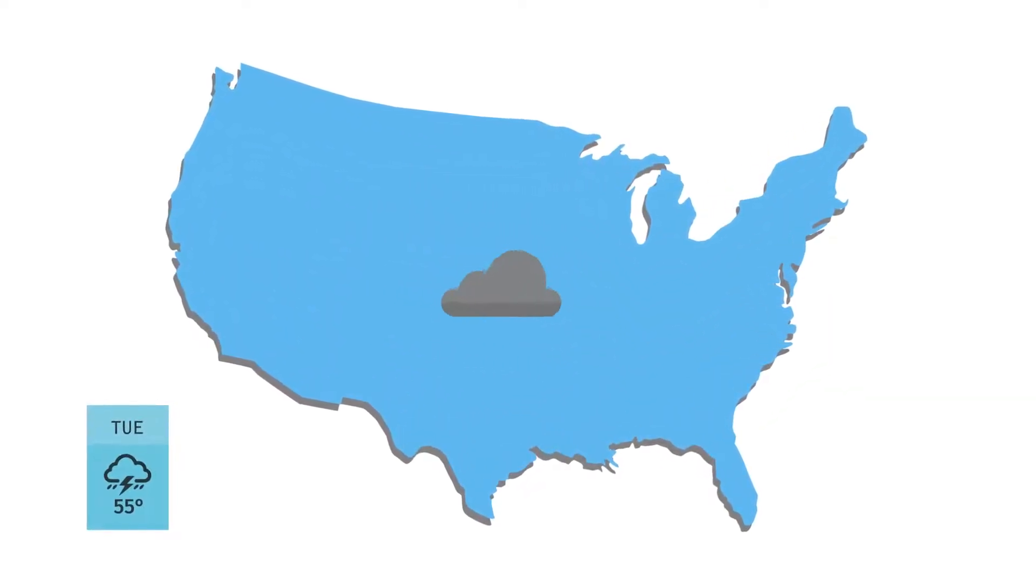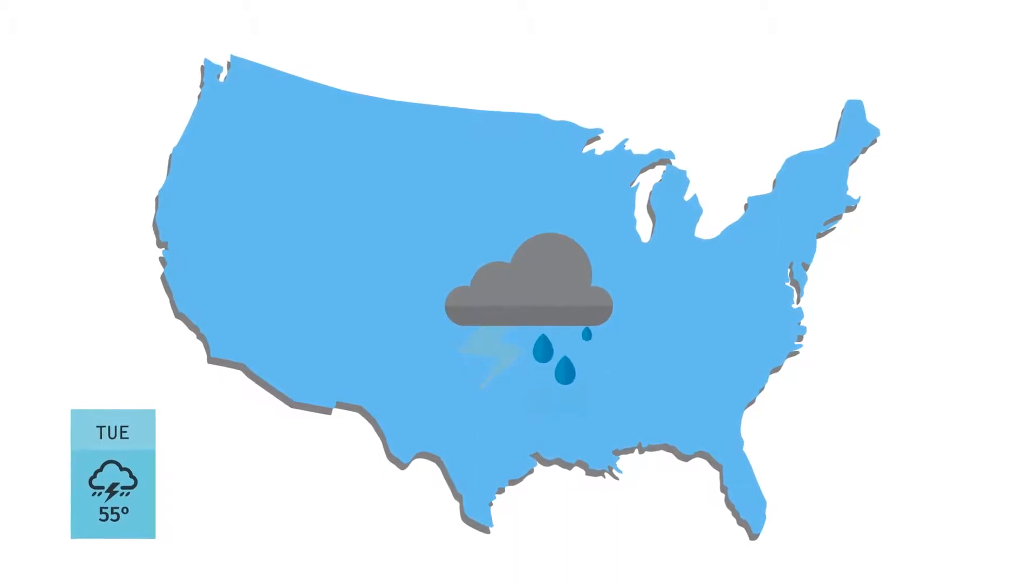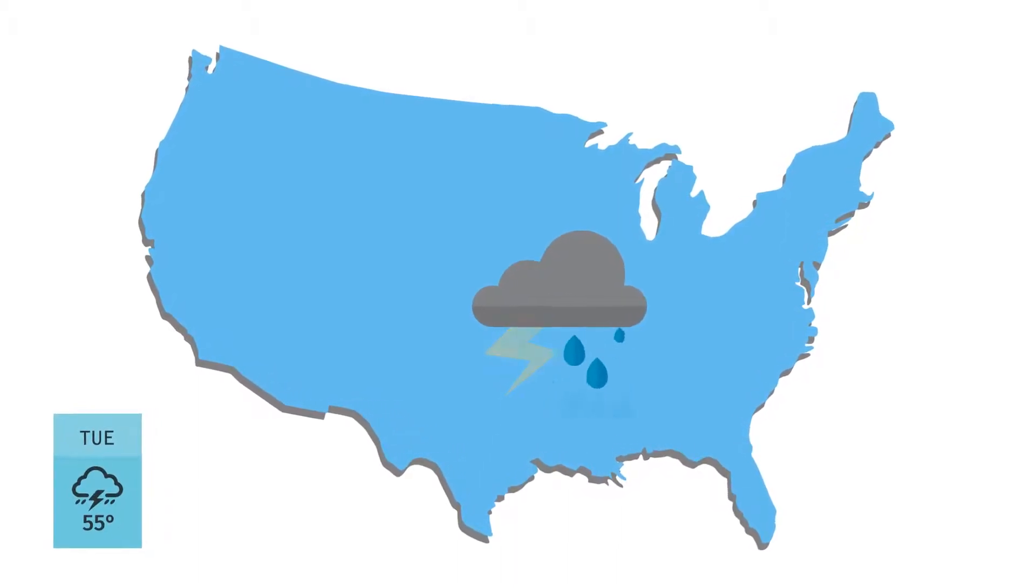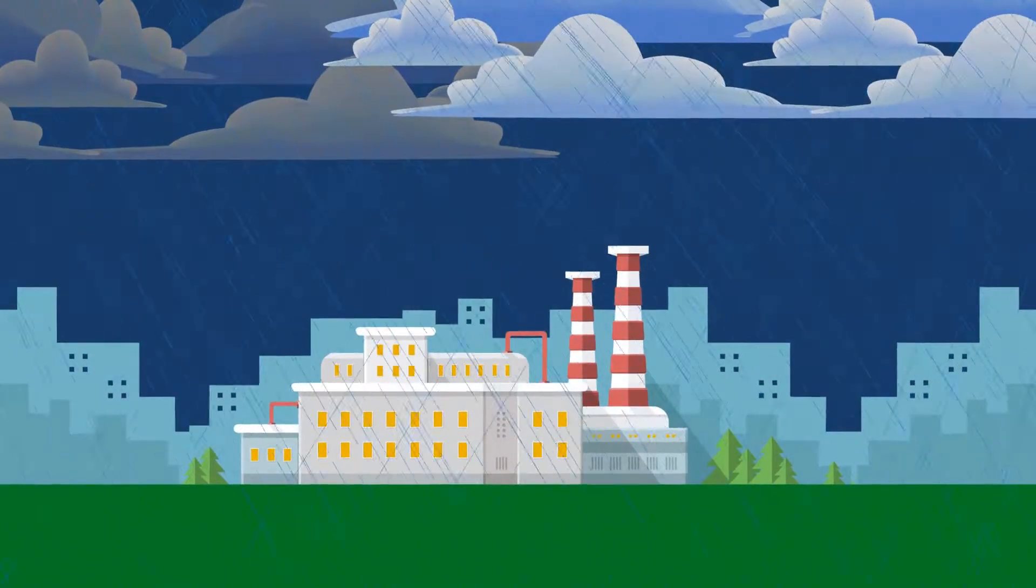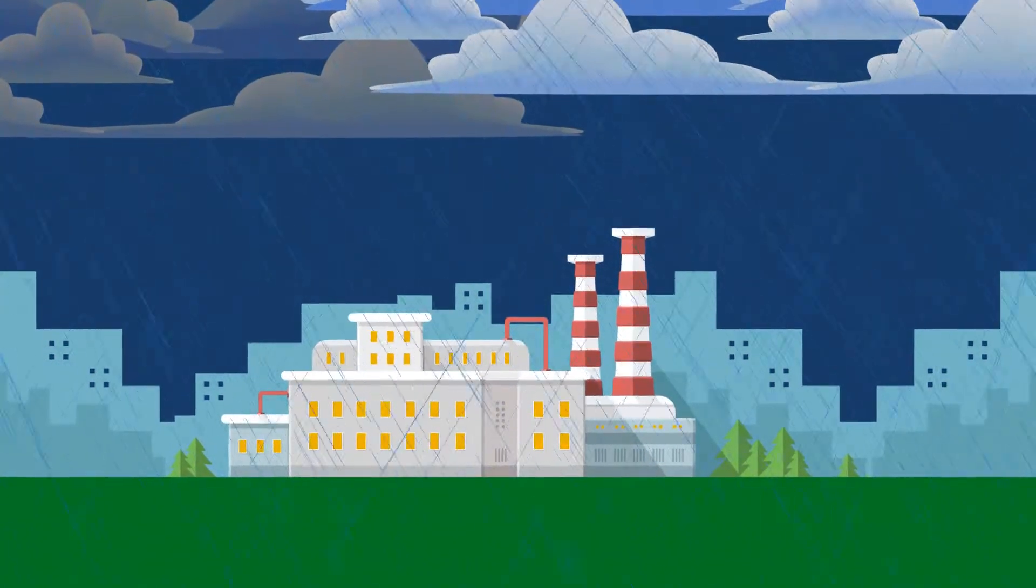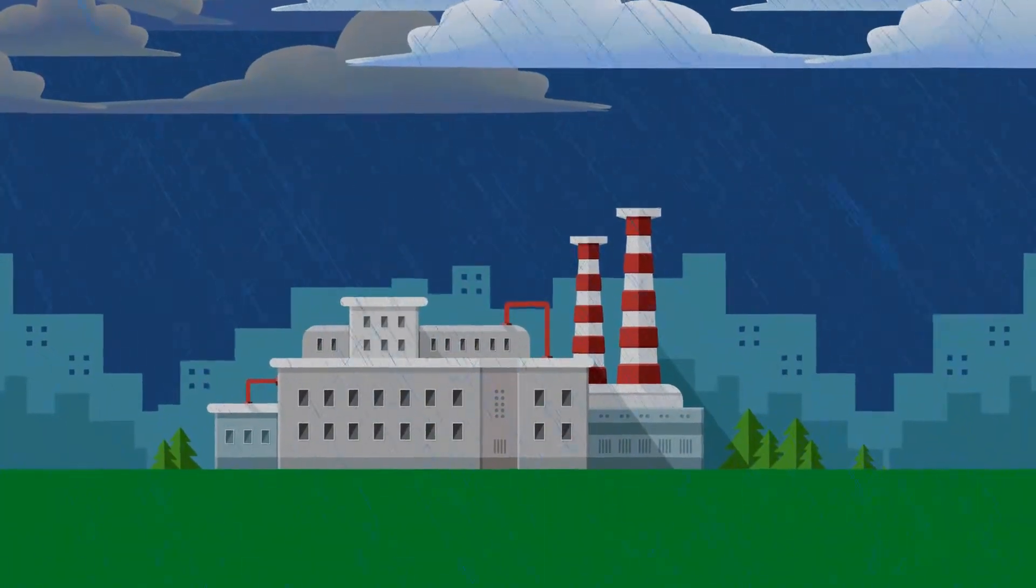It's Tuesday afternoon and severe weather is stirring 30 miles east of a beverage bottling facility in the heart of the country. The storm won't cause any significant damage but it will knock out the power for several hours.